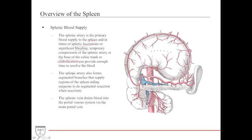Once the splenic artery delivers its blood, the venous drainage from the spleen drains into the portal venous system. That concludes this section of Da Vinci Academy.